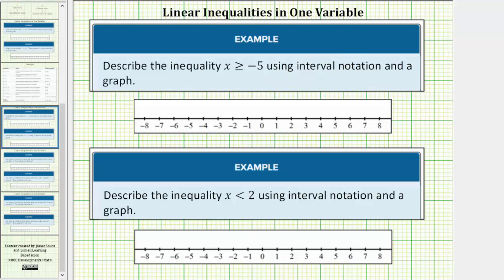Because we have x greater than or equal to negative five, negative five is in the interval or is part of the solution. So we make a closed circle or closed point on negative five. Because it's x greater than or equal to negative five, we draw an arrow to the right where values are greater than negative five.